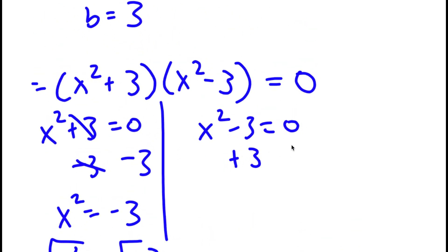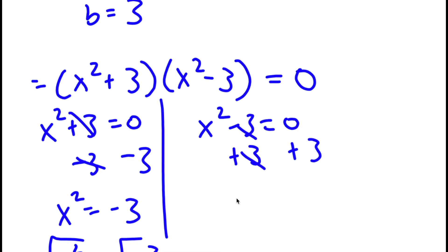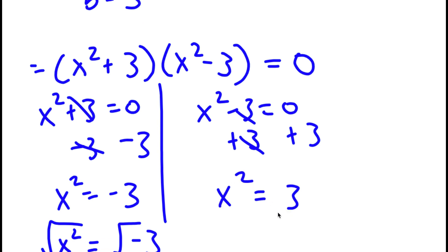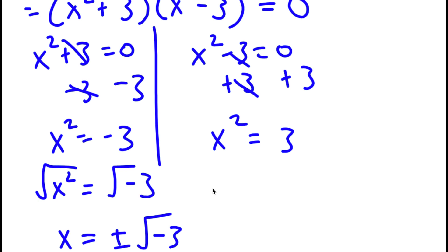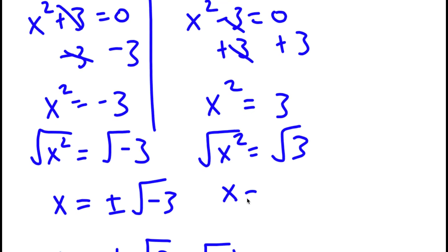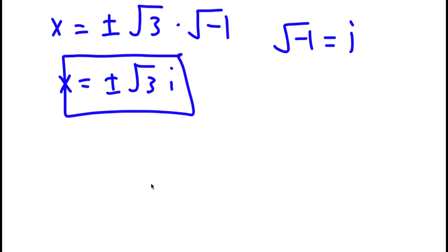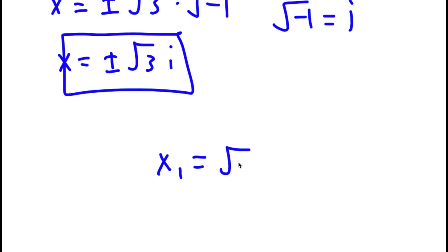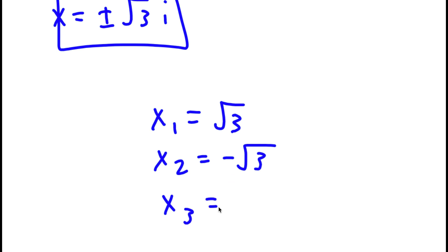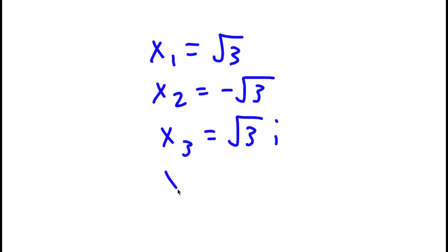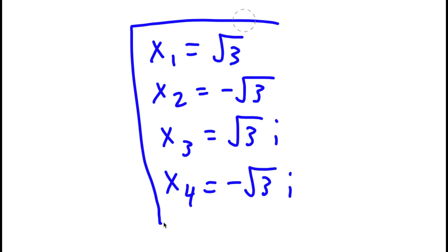For x squared minus 3 equals 0, I add 3 on both sides to get x squared equals 3. Taking the square root on both sides gives x equals plus or minus square root of 3. So these are two more solutions. All four solutions are: x equals square root of 3, x equals negative square root of 3, x equals square root of 3 times i, and x equals negative square root of 3 times i.